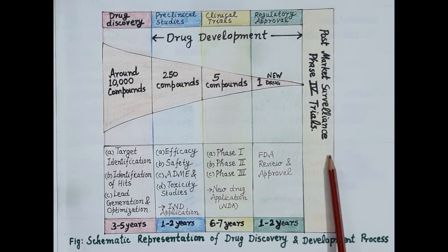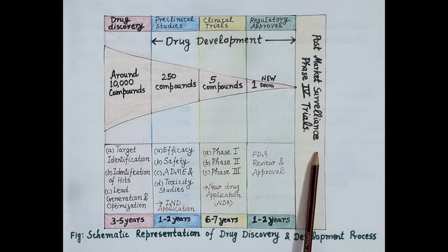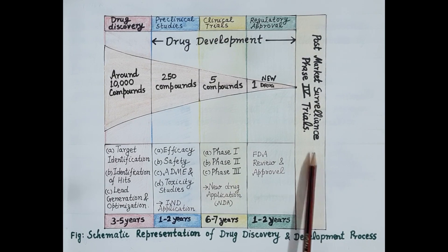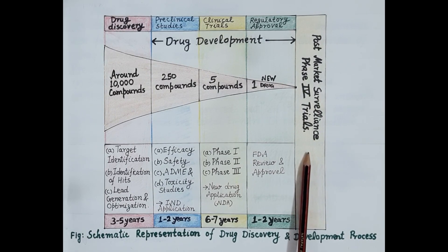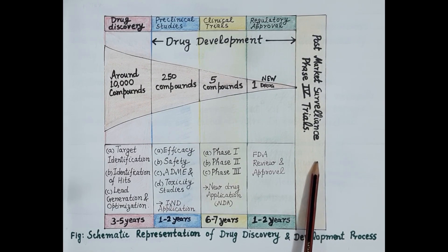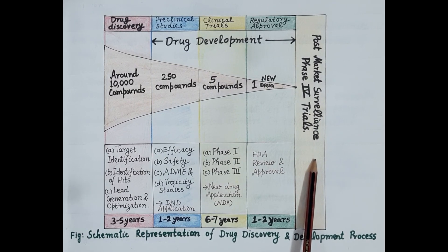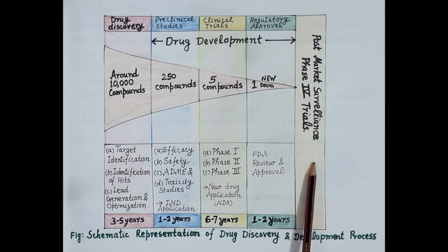To further ascertain and confirm the safety of the new drug, investigational studies are continuously performed while the drug is on the market. The main aim of these studies is to report any adverse drug reactions observed with the use of the new drug. These are called post-marketing surveillance, Phase 4 studies, or Phase 4 trials. When in market, the drug is studied in a large population over a long period of time, and several times major adverse drug reactions are detected only when prescribed to a large patient population.